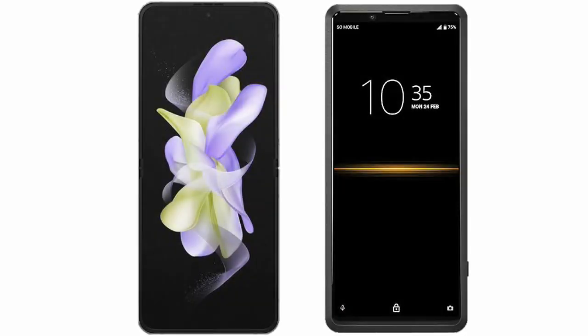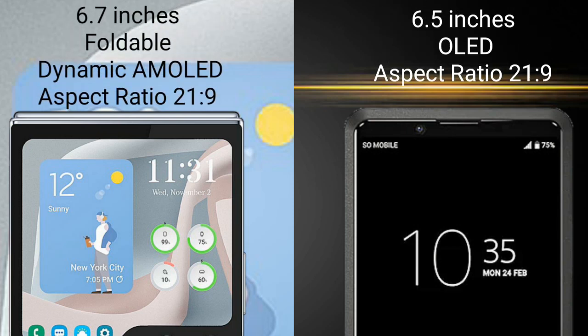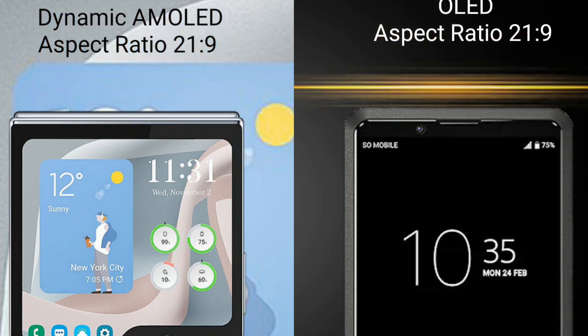I will compare the new Samsung Galaxy Z Flip 5 with Sony Xperia Pro. Samsung Galaxy Z Flip 5 comes with a 6.7-inch Dynamic AMOLED Display and aspect ratio 21:9. Sony Xperia Pro comes with a 6.5-inch OLED Display and aspect ratio 21:9.